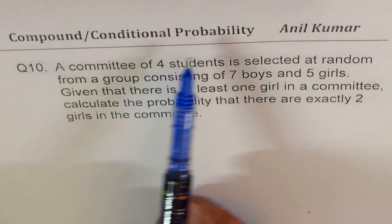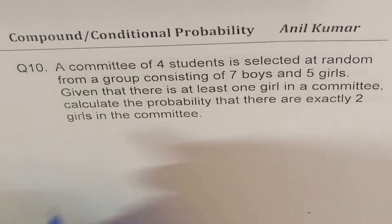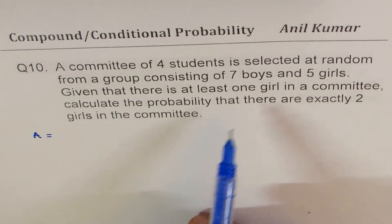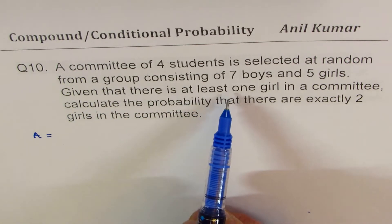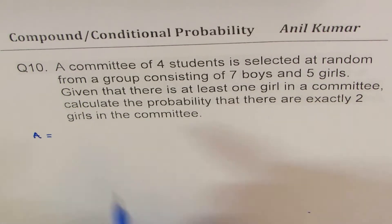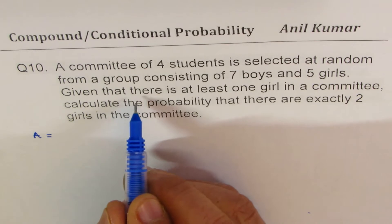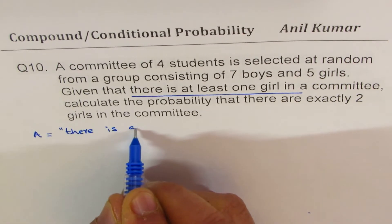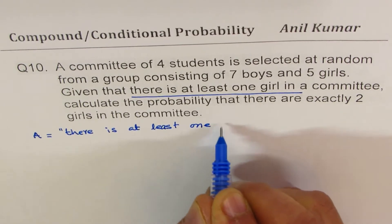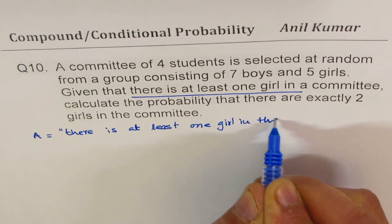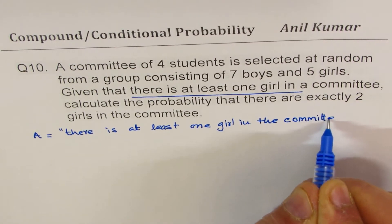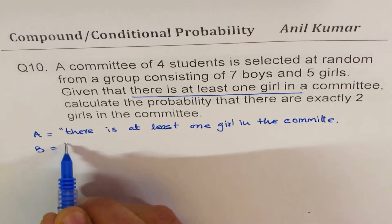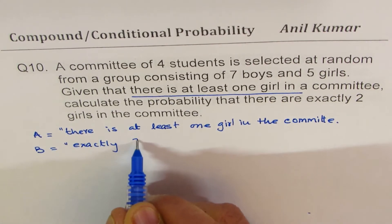This is an excellent example on conditional probability. Let us define our events from what we need to calculate. The given statement tells us that there is at least one girl in the committee — that is event A. The second event B is that there are exactly two girls.